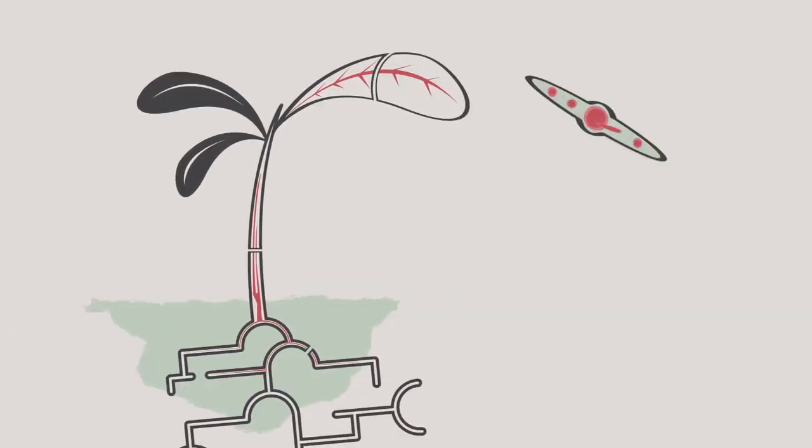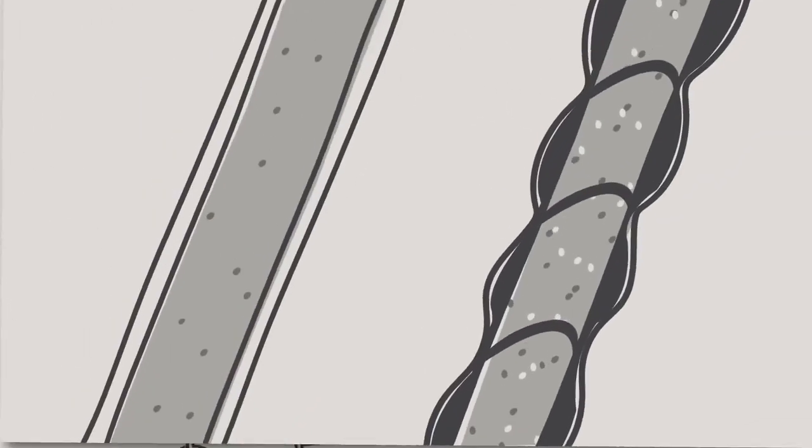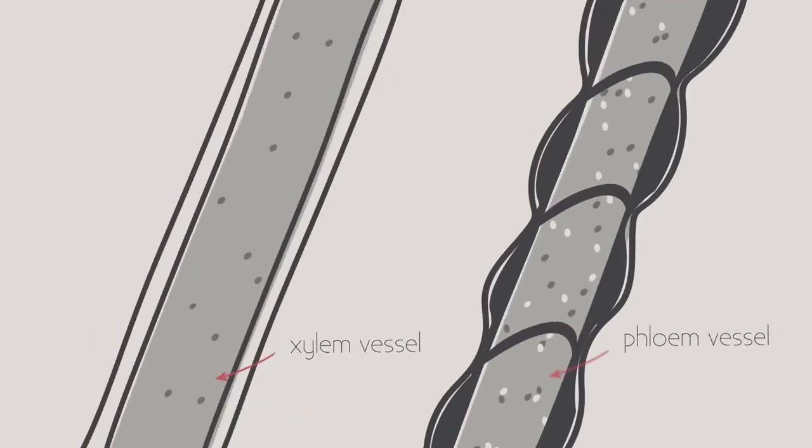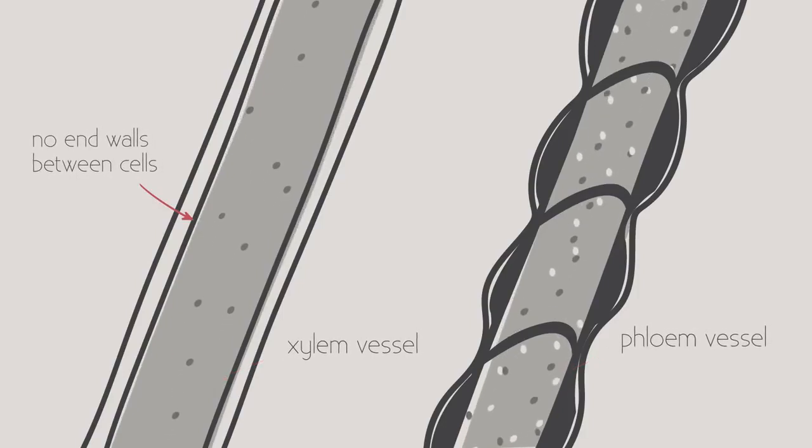The xylem and the phloem are found in groups called vascular bundles and the position of these bundles changes for different parts of the plant. Both the xylem and the phloem are made up of rows of cells that form a continuous tube running the whole length of the plant.